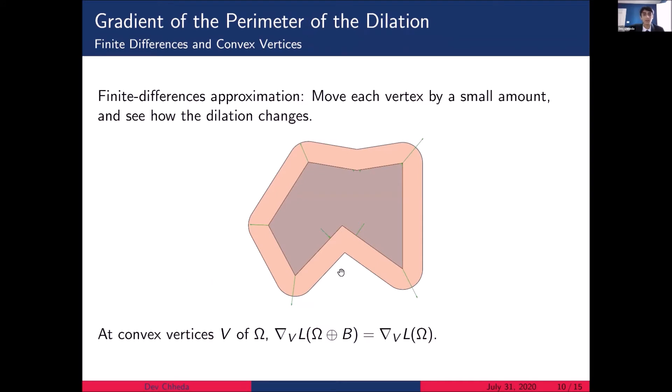So the first thing we try is a finite differences approximation. And what this entails is essentially moving each vertex of our shape by a small amount and just observing how the dilation changes. I've plotted the results of that finite differences approximation here, and you'll notice immediately that there are very few non-zero gradient vectors. And this is not an accident. We conjecture that the only non-zero gradient vectors correspond to the convex and concave vertices of our shape.